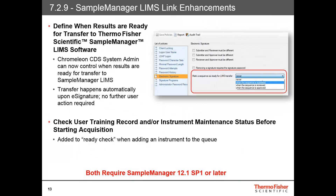This release of Chromeleon CDS allows the system administrator to control when results are ready to transfer to the sample manager LIMS. In the electronic signature section in the administration console, there's a new area to choose when a sequence is ready for LIMS transfer. The choices are: when the electronic report is saved, when the sequence is submitted, when the sequence is reviewed, or when the sequence is approved. When the selected action takes place, the transfer will happen automatically with no further user action required. Also added is a check for current user training records or instrument maintenance status before starting acquisition, performed as part of the ready check when adding an instrument to the queue. Both of these require Sample Manager 12.1 SP1 or later.